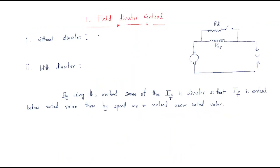The first method is field diverter control. In a series motor, the armature current and field current are all the same. We are connecting a diverter — diverter means the current will flow through it. We are using a diverter resistance Rd, simply called a diverter resistor. A diverter is something which diverts the current flow. Without the diverter, it is open, so generally it is open.